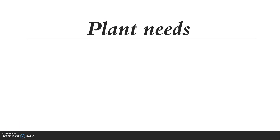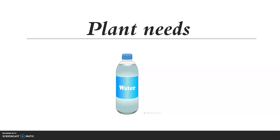Like all living things, plants also need water. Plants normally take in water through their roots. When we water the plant, the roots take in the water, and water travels from the roots up to the stem, to the leaves, to the flower, to the fruit, and to all plant parts.